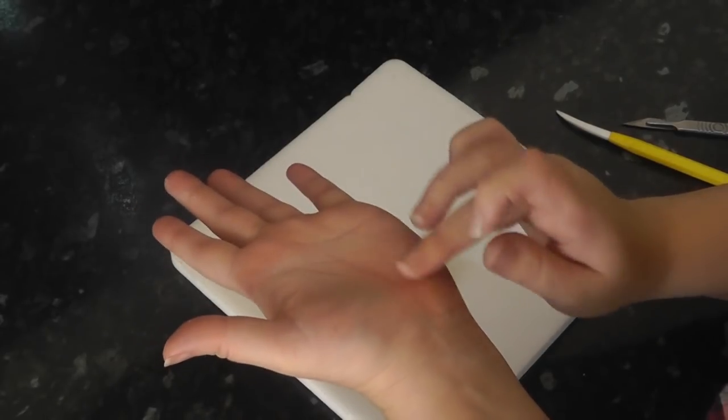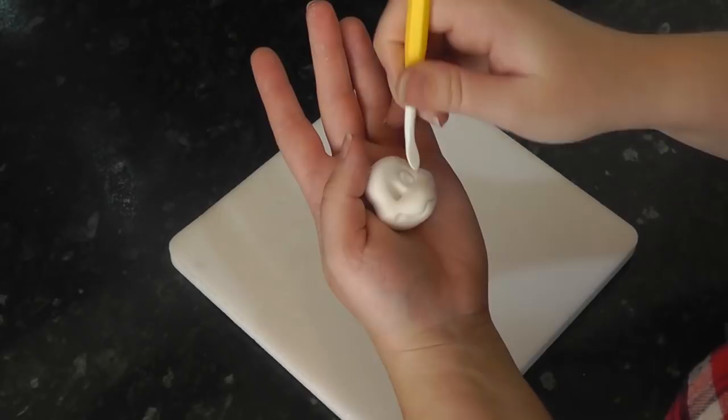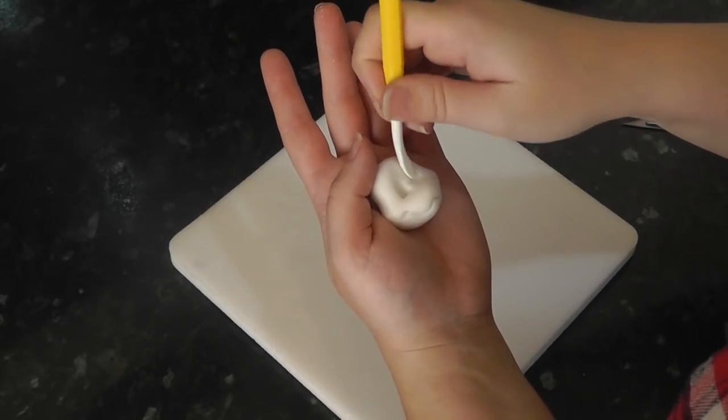Fill the holes with balls of white. Doing it this way helps with painting the outline later. Pat them down flat.